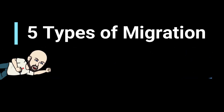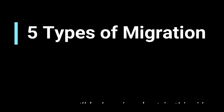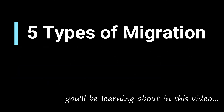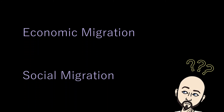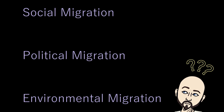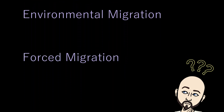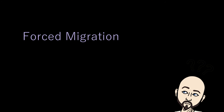There are five types of migration that you'll be learning about in this video: economic migration, social migration, political migration, environmental migration, and forced migration.